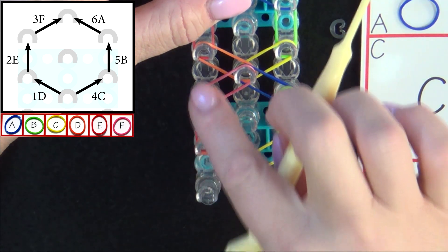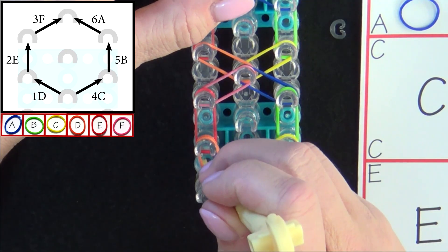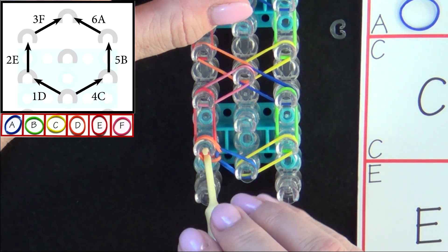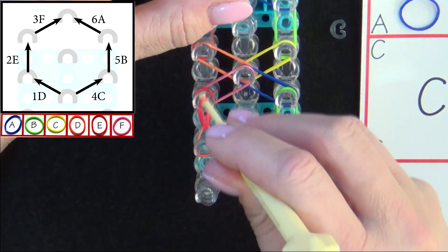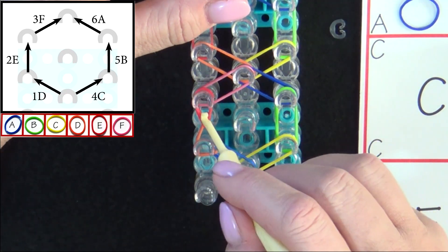The next band we loop will be 2E. You reach in and pull back that top D band. Grab the E and pull it forward. Again, notice how it made that teardrop shape.